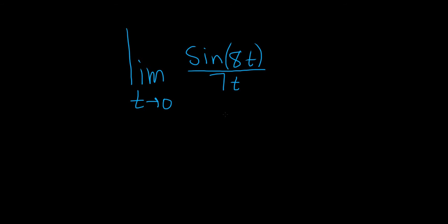Find the limit as t approaches 0 of the sine of 8t over 7t. So if you just try to plug in 0, you end up with 0 on the bottom. So that will not work.